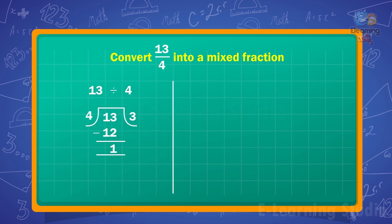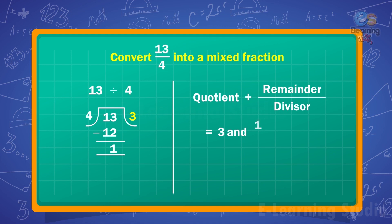Now, put all numbers in this form: quotient plus remainder upon divisor. Here, quotient is 3, remainder is 1, and divisor is 4. So, 13 upon 4 is equal to 3 and 1 upon 4.